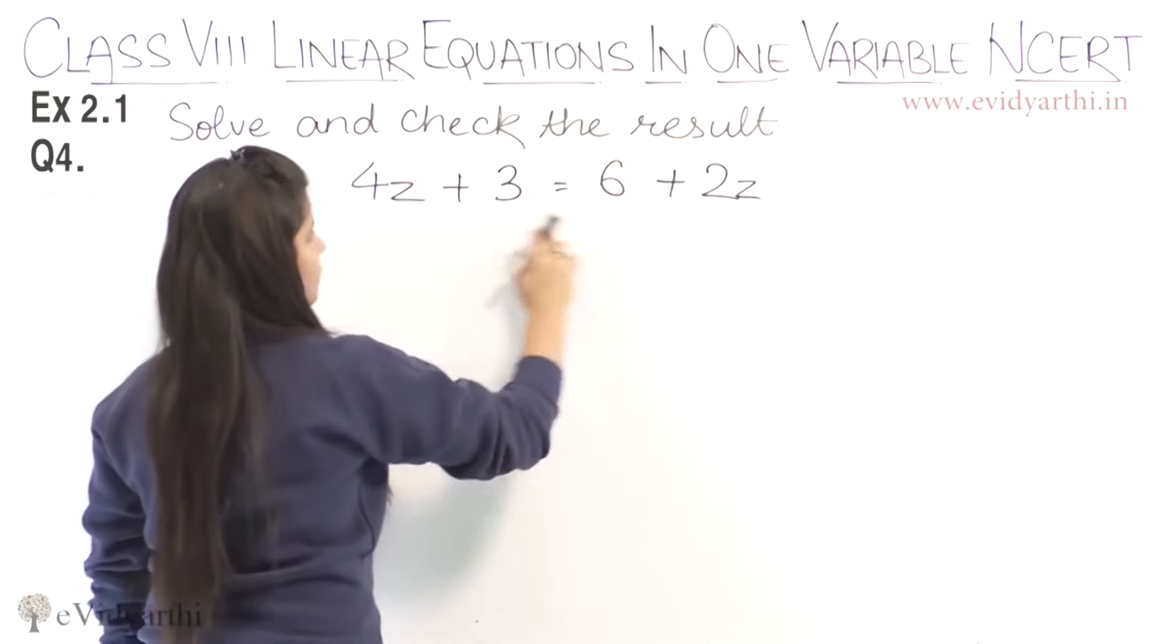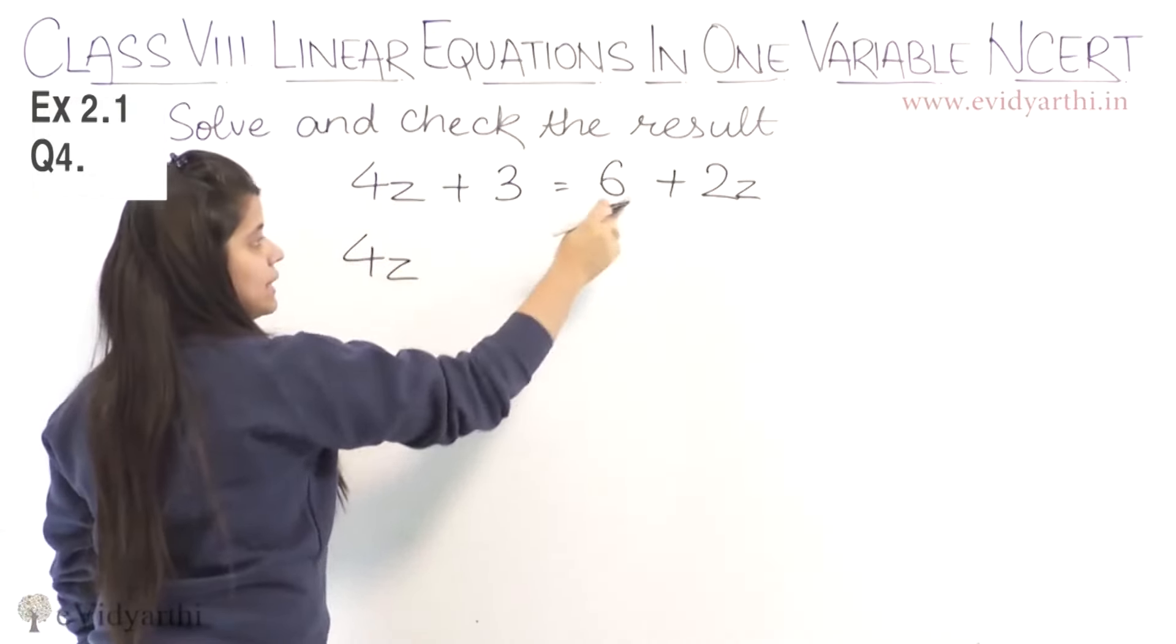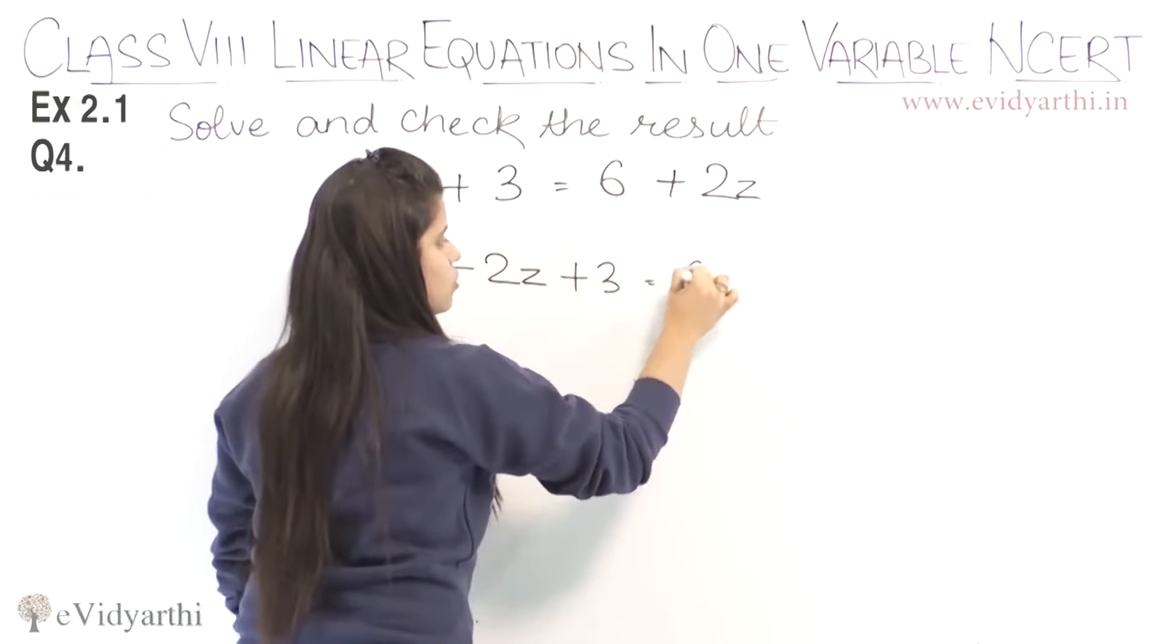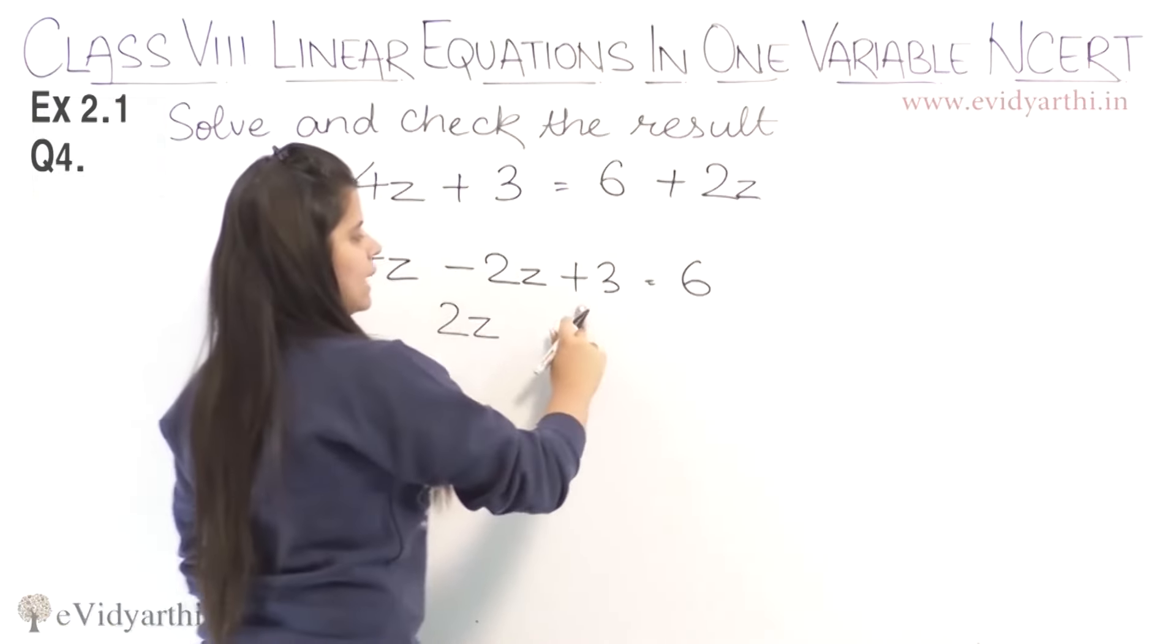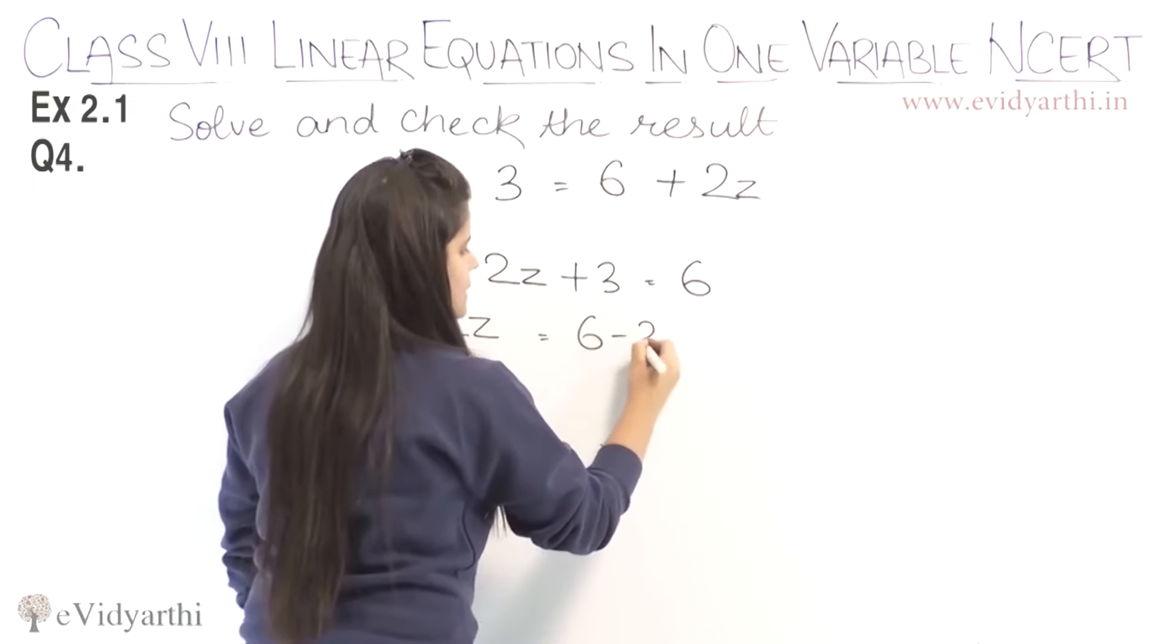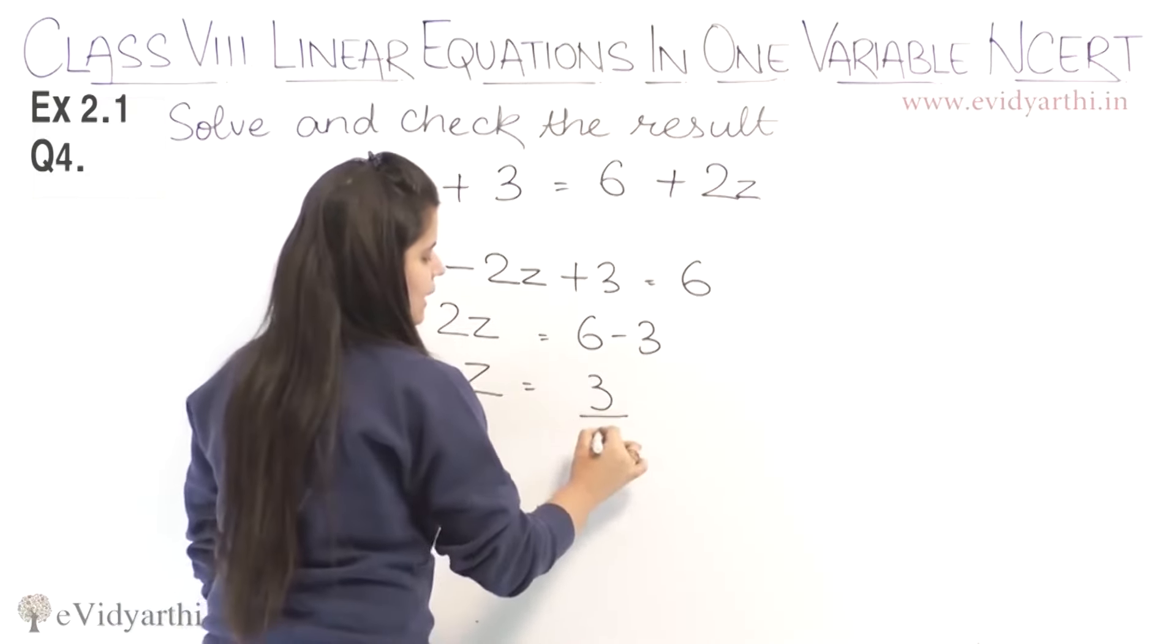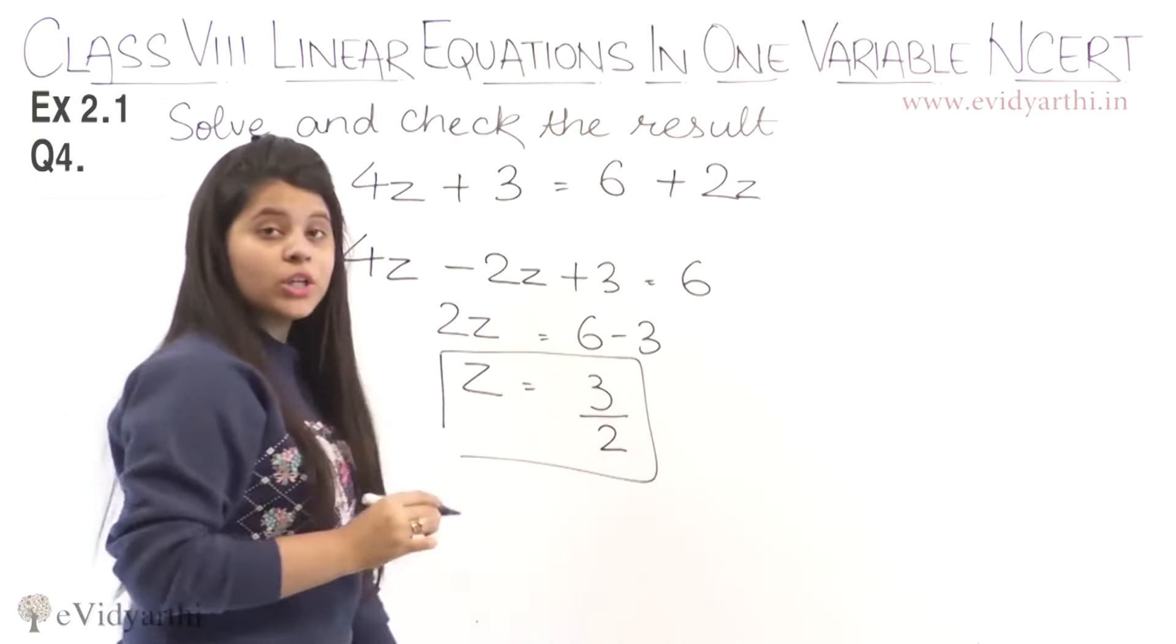Here we go. We will get 4z minus 2z plus 3 equals 6. Now, 4 minus 2 is 2z, and plus 3 goes to the other side. We will get 6 minus 3. So, 2z equals 3, and dividing by 2, z equals 3 upon 2.